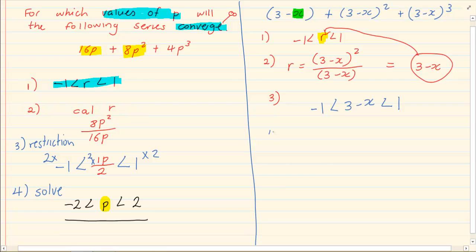Now we need to solve. If I take my 3 over, I am going to have minus 1 minus 3, and on this side I am going to have 1 minus 3. So I now have minus 4, minus x, and minus 2. So we have minus x is bigger than minus 4 but smaller than minus 2.